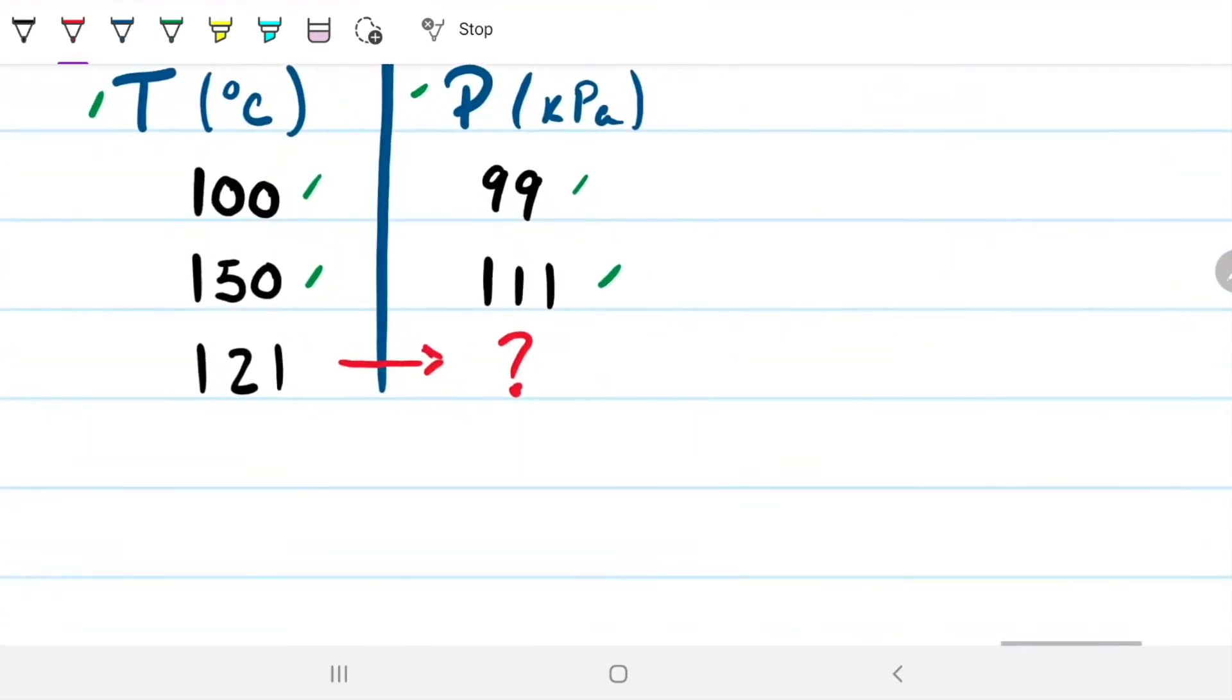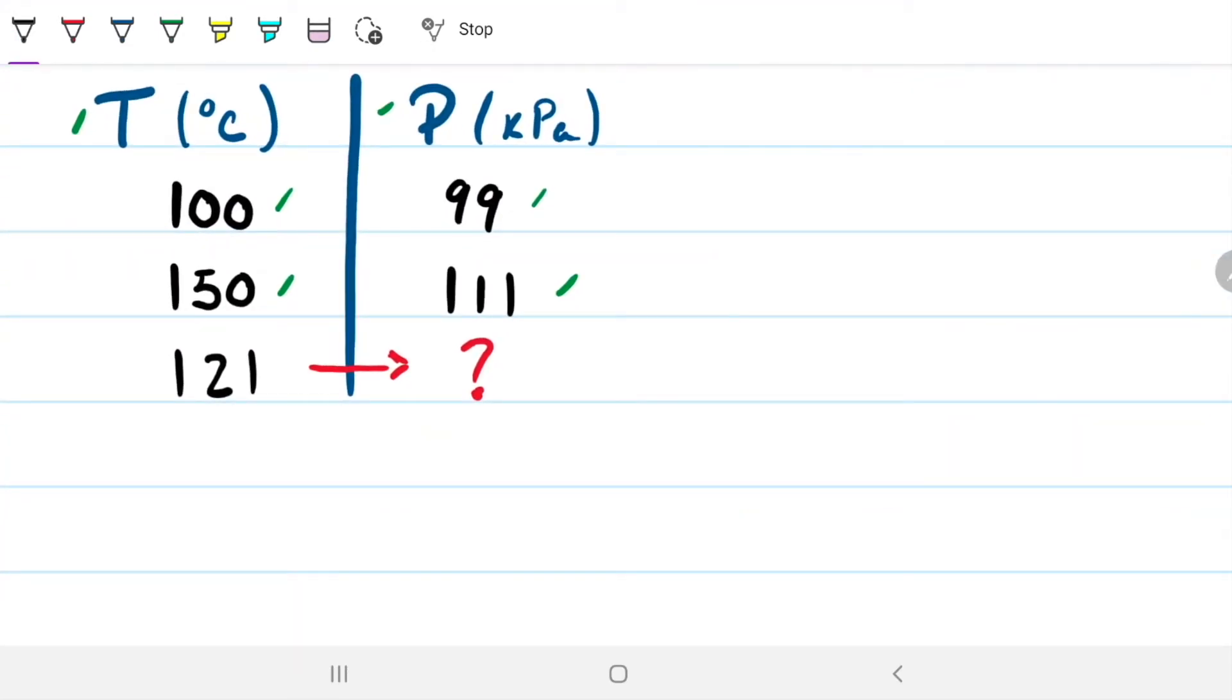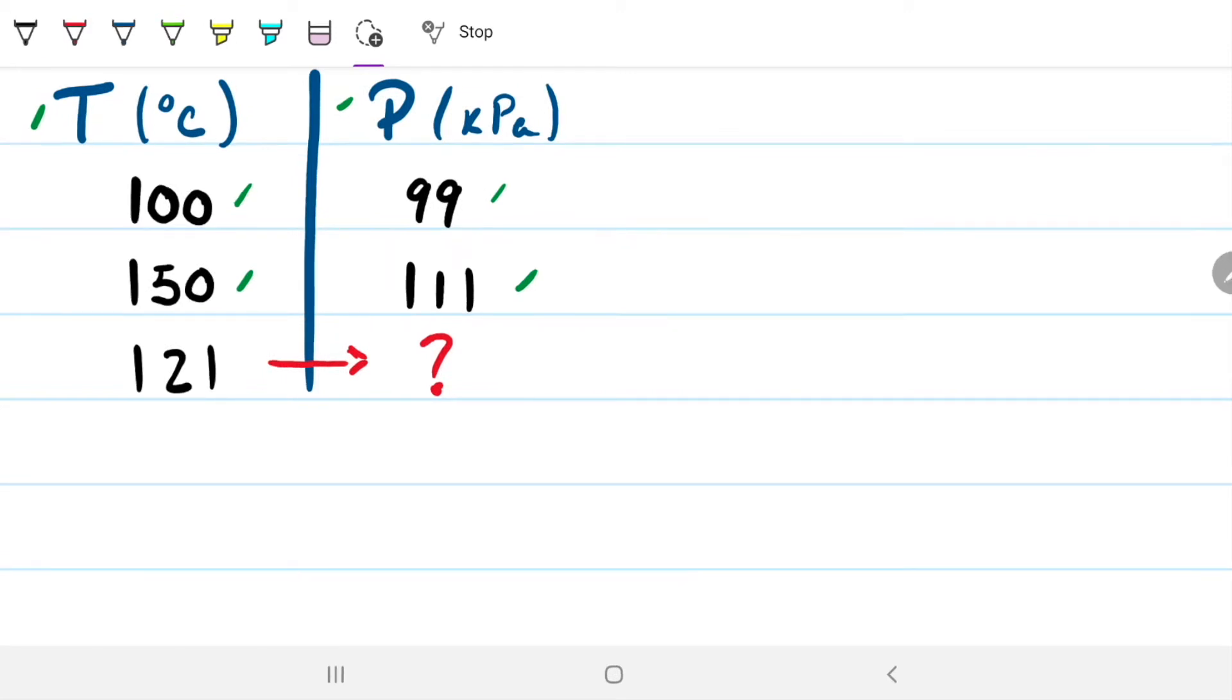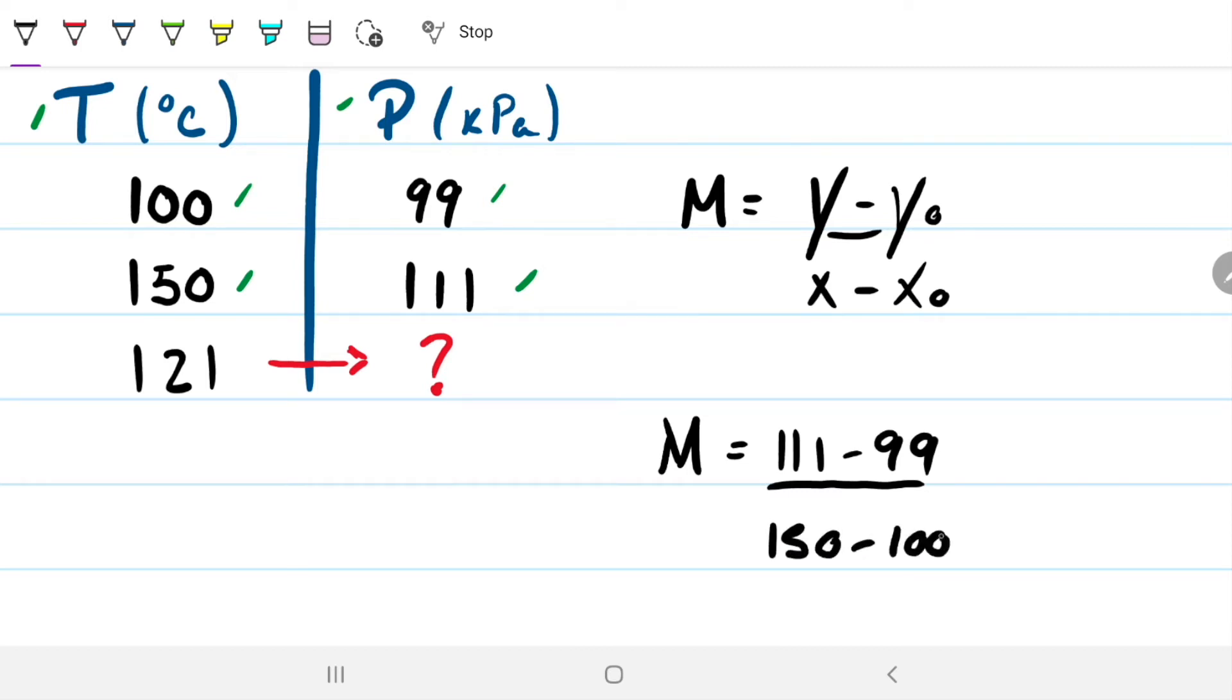You can go back to the video in which we discussed the theory behind this. So on this one, we're just going to solve it straight off. We know that the slope M is given by Y minus Y0, that is any two values of Y, divided by X minus X0. So in this case here, we can do 111 minus 99, 150 minus 100. So that gives us 12 over 50, which is the slope for this situation here.